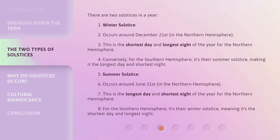There are two solstices in a year. The winter solstice occurs around December 21st in the Northern Hemisphere. This is the shortest day and longest night of the year for the Northern Hemisphere. Conversely, for the Southern Hemisphere, it's their summer solstice, making it the longest day and shortest night.